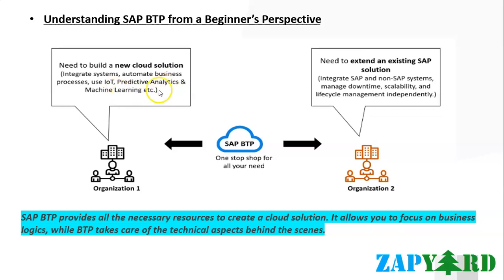They want to incorporate new-age technologies to automate their complex business processes. On the other hand, there is an organization which is already an existing SAP customer and wants to build a cloud solution to extend their SAP systems — for example S/4HANA, or any SaaS or cloud solutions. Such a customer needs services for seamless integration between systems and their application, and also needs independence in managing downtime, scalability, and lifecycle management independently.